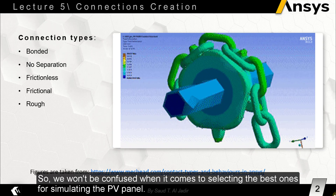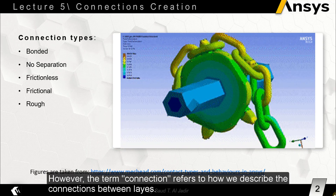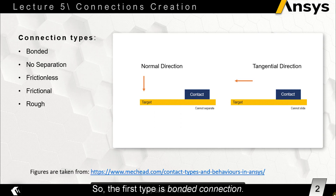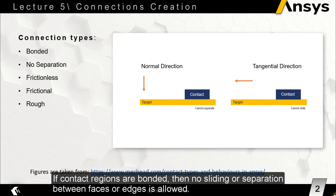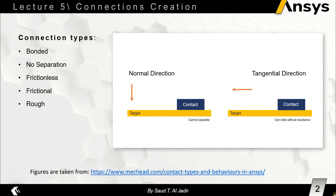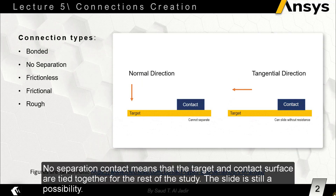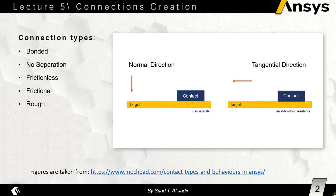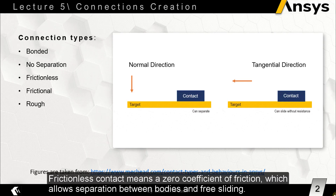The term connection refers to how we describe the connections between layers. The first type is bonded connection — if contact regions are bonded, then no sliding or separation between faces or edges is allowed. No separation contact means that the target and contact surface are tied together for the rest of the study; slide is still a possibility. Frictionless contact means a zero coefficient of friction, which allows separation between bodies.